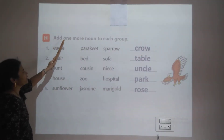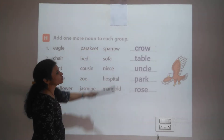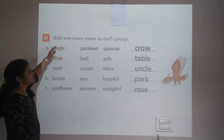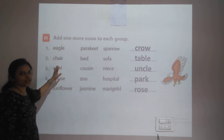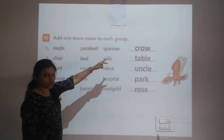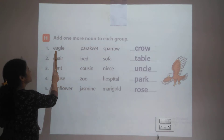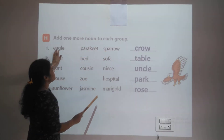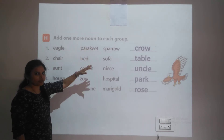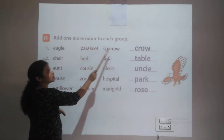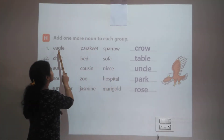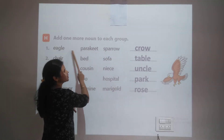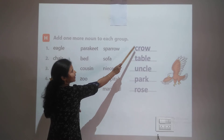Question H: Add one more noun to each group. The first group contains bird names. We have eagle, parakeet, sparrow — and we add 'crow'. So the group becomes: eagle, parakeet, sparrow, and crow.